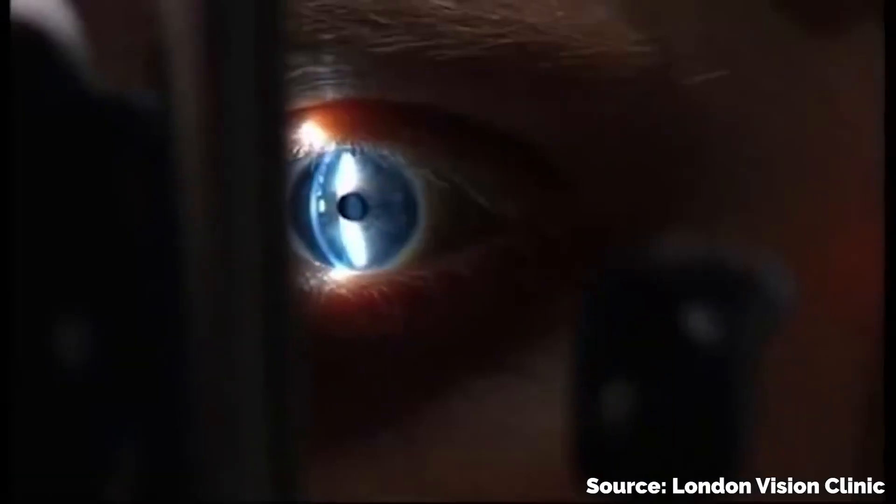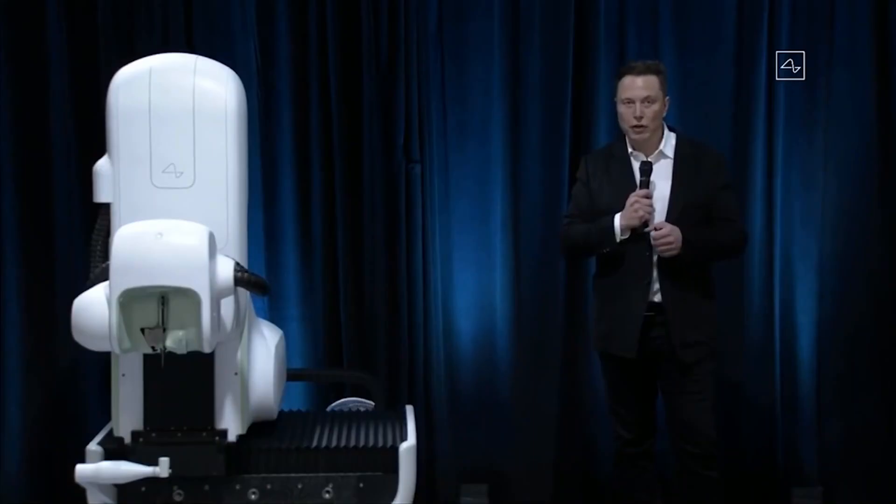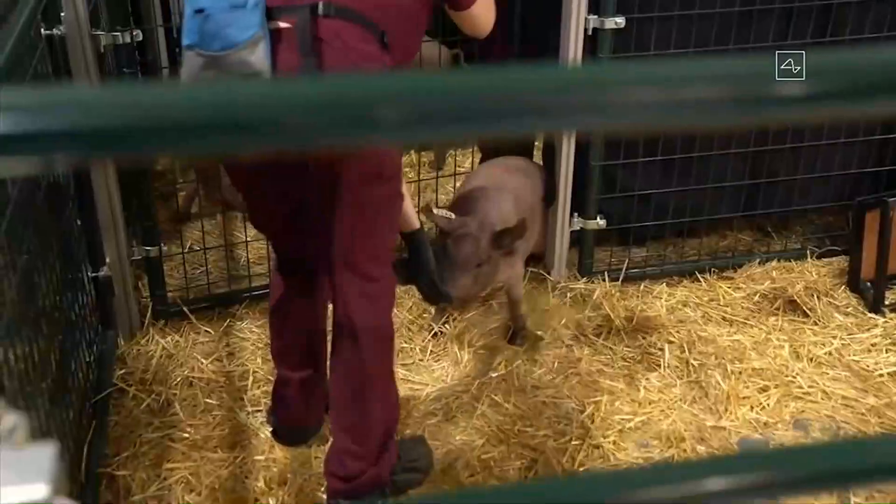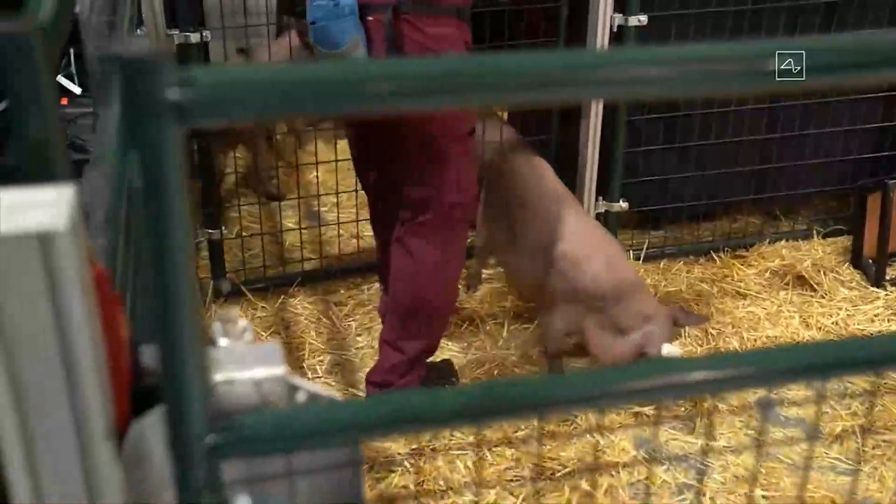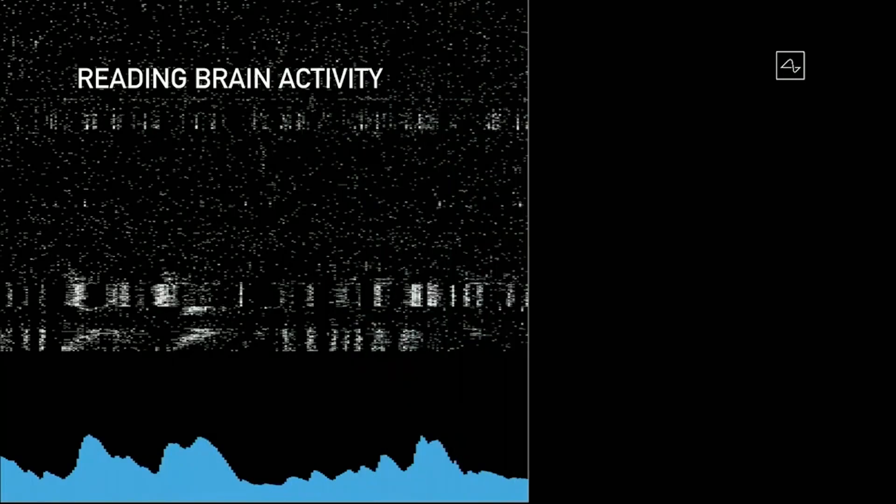During a live demonstration in 2020, the company successfully demonstrated one of its chips being used on a pig. The proof-of-concept demonstration revealed how the chip could precisely predict Gertrude's limb positions while walking on a treadmill, as well as capture brain activity when the pig sniffed about for food. According to Musk, the pig had been living with the chip implanted in her skull for two months.